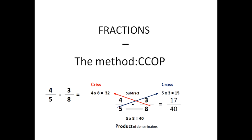Notice that the two denominators are five and eight. There's no whole number times five that gives you eight, so we apply the crisscross method. The first multiplication: eight times four goes up to the left — the criss — which is thirty-two. The second multiplication: five times three is the cross, which is fifteen. Subtract the two numbers: thirty-two minus fifteen is seventeen for the numerator.